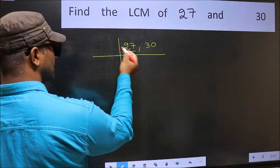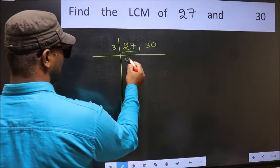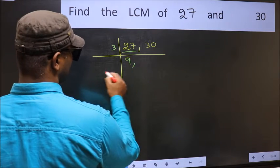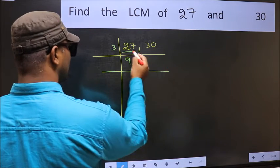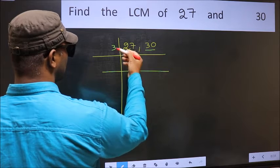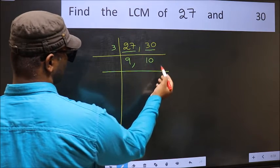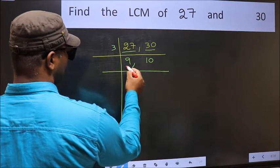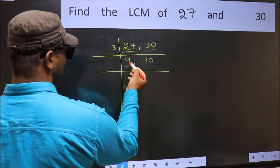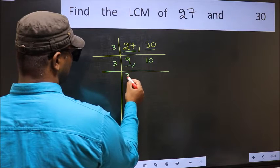27 is 3 nines, so we write 27. The other number, 30 — when do we get 30 in the 3 table? 3 tens is 30. Now here we have 9, and 9 is 3 threes.